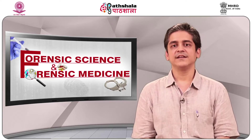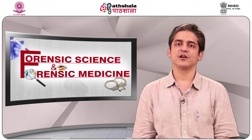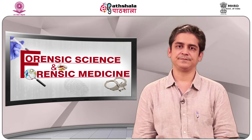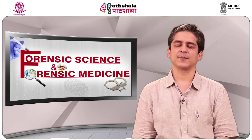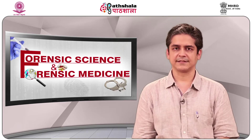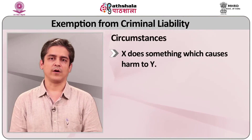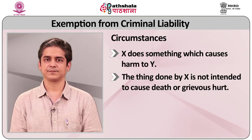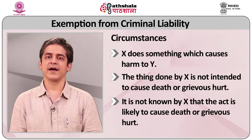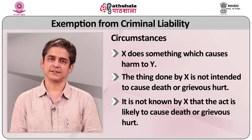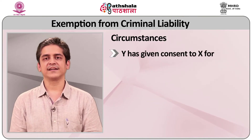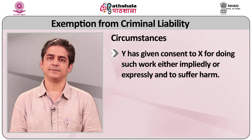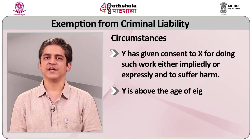Now let's deal with the individual defenses which are based on the idea of consent. First is act done with consent under Section 87. Section 87 provides exemption from criminal liability under the following circumstances: X does something which causes harm to Y; the thing done by X is not intended to cause death or grievous hurt; it is not known by X that the act is likely to cause death or grievous hurt; Y has given consent to X for doing such work either impliedly or explicitly and to suffer harm; and Y is above the age of 18 years.